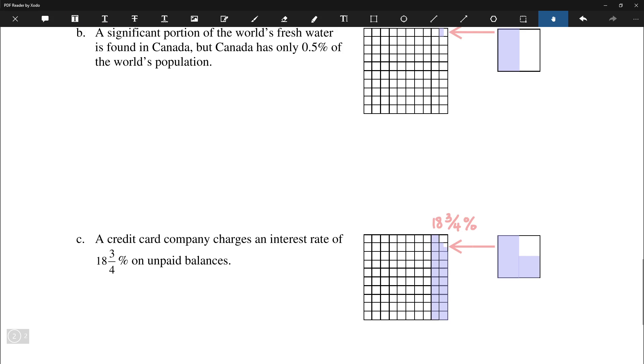So that is how we use a 10 by 10 grid to represent percent, knowing that if it's ever over 100%, we need additional grids. And if a number is less than 1%, we shade in part of a square. And that's it for today. So thank you for listening.